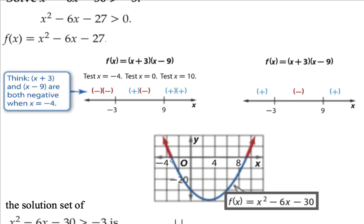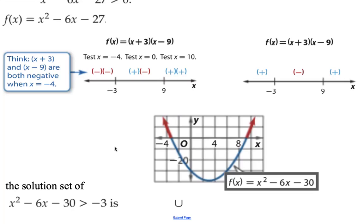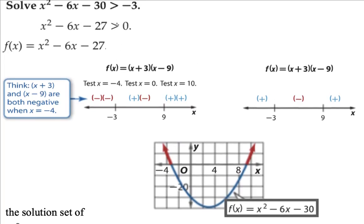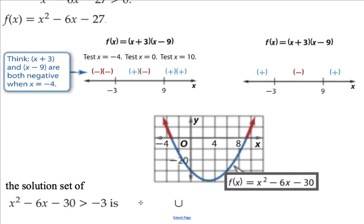Graphically, this particular problem is a quadratic — it's a parabola that opens up because our leading coefficient is positive. We want to know where it is positive. Our sign chart told us to the left of negative 3 and to the right of positive 9; those are the two areas shown in red in the graph. Notice we don't have an equal to with our inequality — it's only greater than — so we use parentheses, not brackets. The solution set is from negative infinity up to negative 3 (not including negative 3), union anything greater than 9.